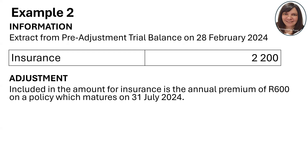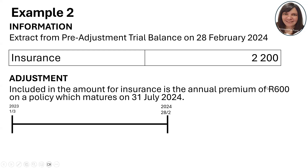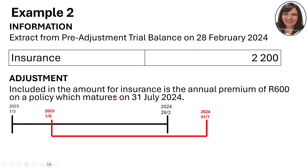Example two: extract from the pre-adjustment trial balance for 28 February 2024. We have an insurance balance of 2,200. Included in that amount is an annual premium of 600 on a policy that matures 31 July. This means we have many different insurance policies and one is a 12-month policy that expires 31 July 2024 — next financial year. When you see dates, don't freak out — use a timeline. My year ends 28 February 2024, so it starts 1 March.